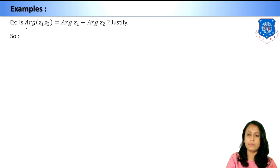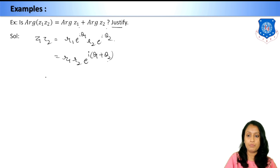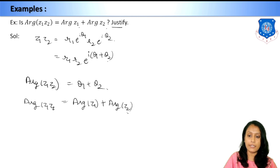Example 3: Justify whether arg(z₁·z₂) = arg(z₁) + arg(z₂). Writing z₁ and z₂ in exponential form: z₁·z₂ = r₁e^(iθ₁) · r₂e^(iθ₂) = r₁r₂·e^(i(θ₁+θ₂)). Applying the argument: arg(z₁·z₂) = θ₁ + θ₂. Since θ₁ = arg(z₁) and θ₂ = arg(z₂), we have proved that arg(z₁·z₂) = arg(z₁) + arg(z₂).